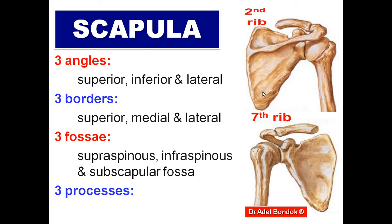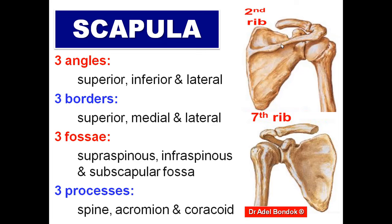The three fossae are: the supraspinous fossa above the spine, the infraspinous fossa below the spine, and the subscapular fossa on the anterior surface. The three processes are: the spine — whose dorsal surface is called the crest — the acromion, and the coracoid process. The crest of the spine lies at the level of the third thoracic spine (T3).